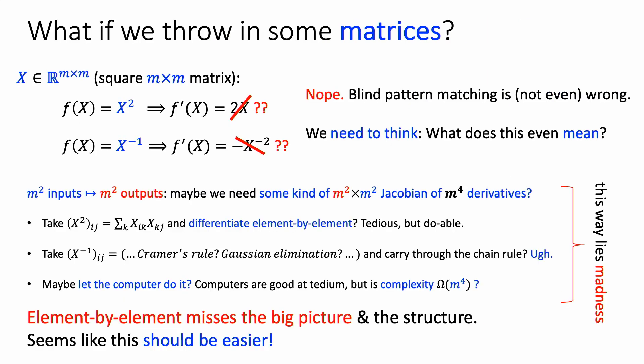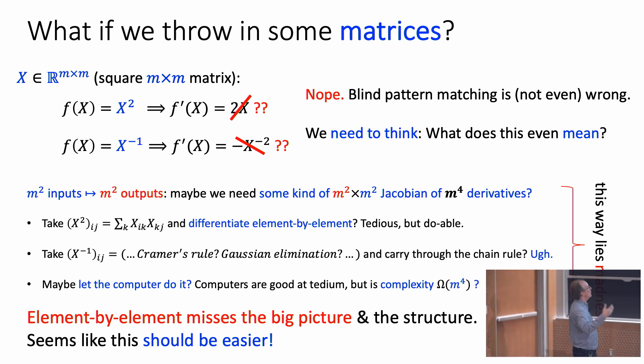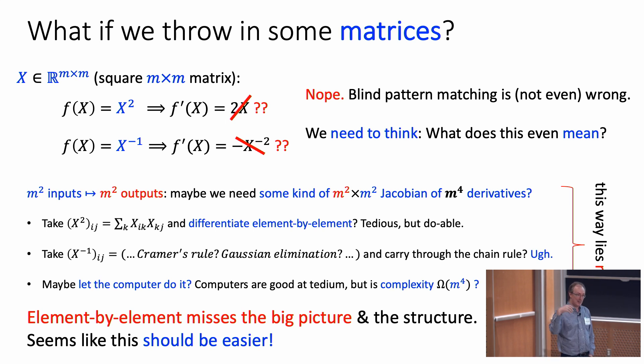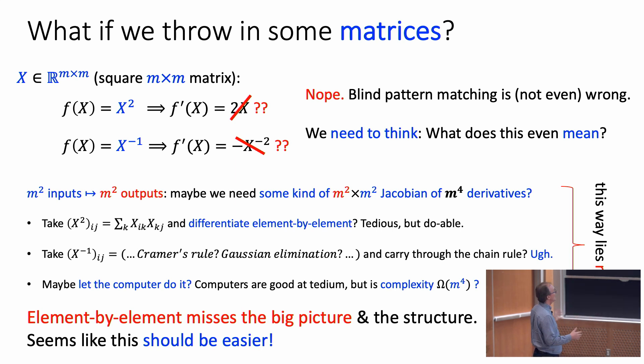Let's make it a little bit harder. Suppose f(x) = x², but now x is not a number — it's a square matrix. If you pattern-match you'd say 'oh, 2x,' but that's not only wrong, it's not even the right kind of thing. We have to think about what it even means to take the derivative of x² or x⁻¹ with respect to x when x is a matrix. You could say there are m² inputs and m² outputs, so there should be some m²×m² Jacobian — that's m⁴ derivatives.